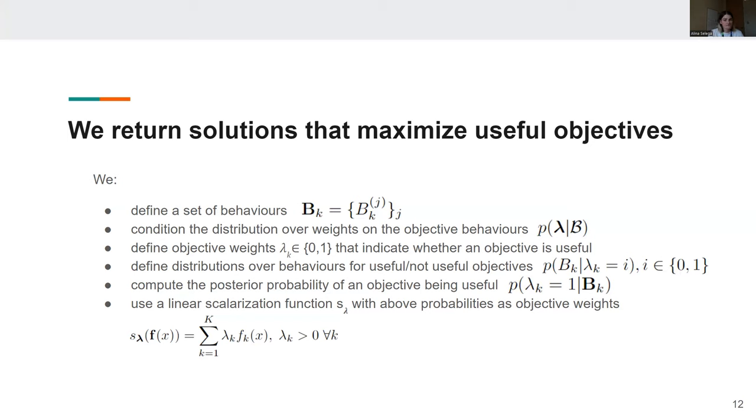And finally, we use a linear scalarization function as lambda, where these above posterior probabilities end up acting as objective weights. So if an objective has a high posterior probability of being useful, it will be upweighted in our optimization procedure, and if it has a low probability of being useful given its behaviors, it will be downweighted.